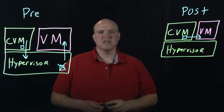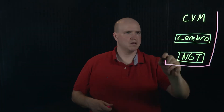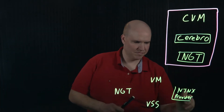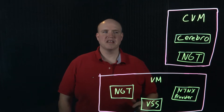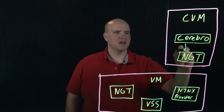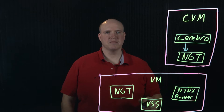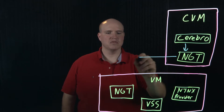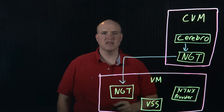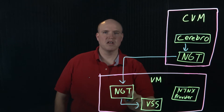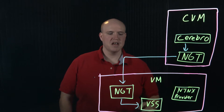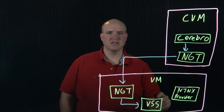Let's look at this communication in a more granular level. Once Cerebro receives the command to take the snapshot, Cerebro will talk to NGT running in the CVM. This, in turn, will talk to NGT running in the virtual machine. NGT will talk to VSS running in the virtual machine. At this point, VSS will pause and quiesce the virtual machine.